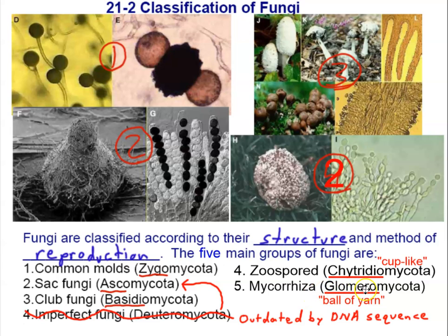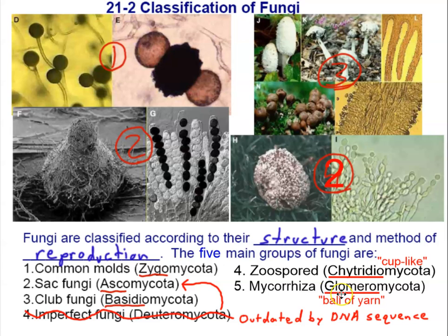The phylum Glomeromycota is also known as mycorrhiza because they form a symbiotic relationship with plants and help plants get the nutrients they need to grow. We'll be looking at mycorrhiza in greater detail later. 'Glomero' means ball of yarn, referring to the specialized hyphae that grow on and into the roots of a plant, which look like a tangled ball of yarn under the microscope.